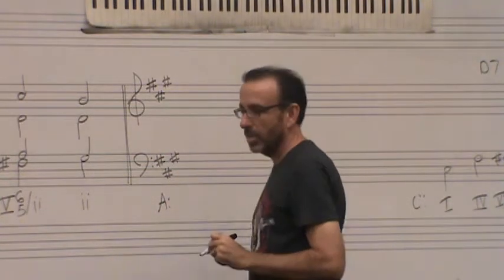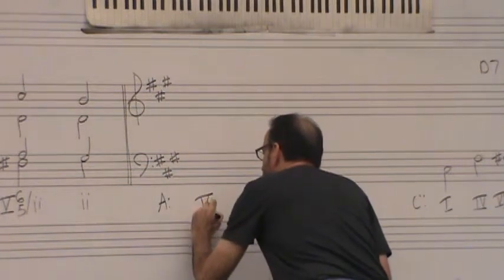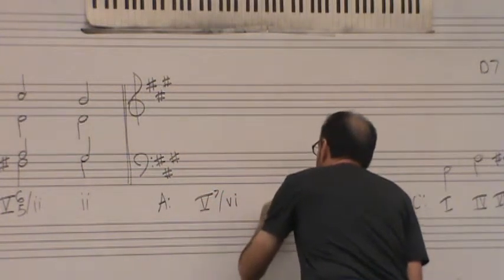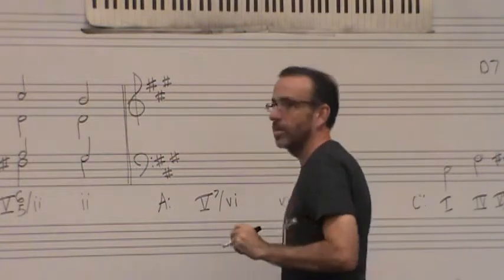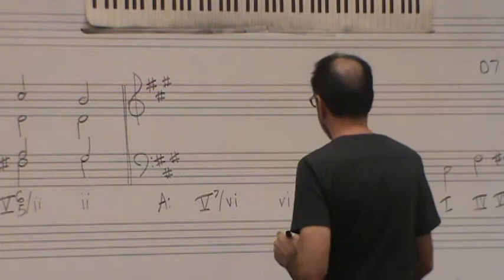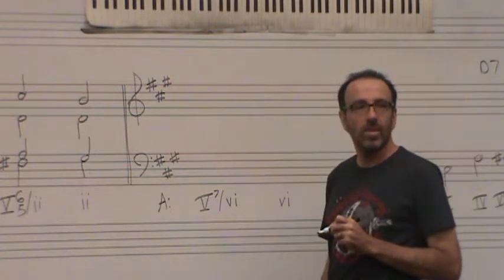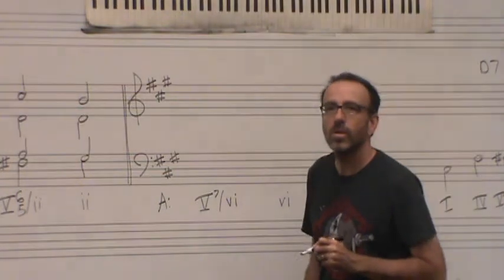So our next one, we're in the key of A and we're going to 5-7 of 6 to 6. So what is 6 in the key of A major? F sharp. F sharp.